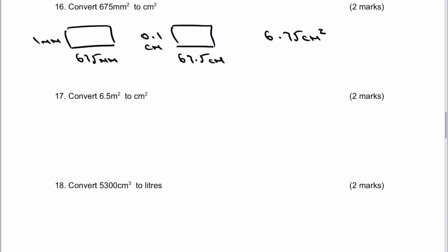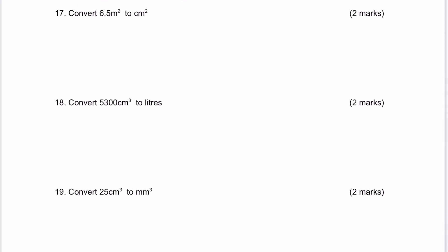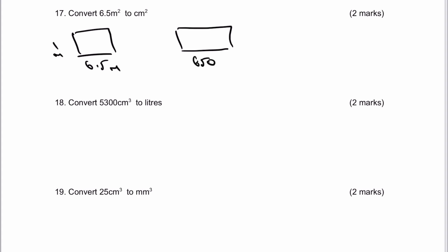Question number 17 — please do stop the video and have a go. Use exactly the same principle. We're going to make this 6.5 by 1, and this is going to be in metres. I'm going to change it to centimetres — that's exactly the same size — which is going to be 650 centimetres by 100 centimetres. When I multiply that out, I'm actually going to get 65,000 centimetres squared, which would be the answer to question number 17.